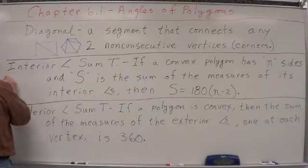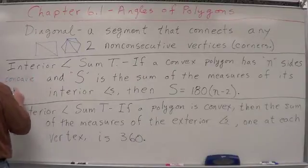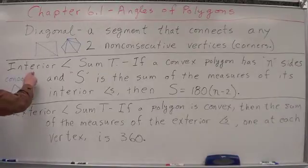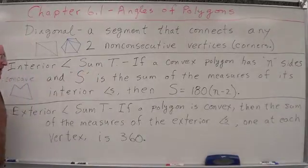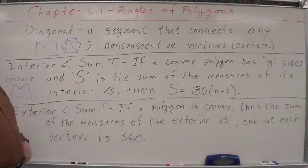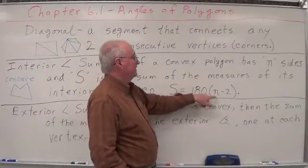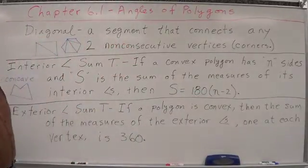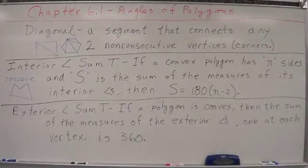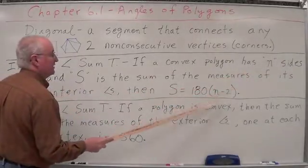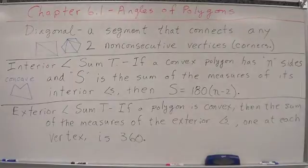Concave means it's caved in on one side — it goes into the polygon. A concave polygon would look something like this. Interior Angle Sum Theorem: if a convex polygon has n sides, and s is the sum of the measures of its interior angles, then s equals 180 times the quantity (n minus 2). If we add all the interior angles of a convex polygon together and we know how many sides it has, we can predict what the sum of its interior angles is.